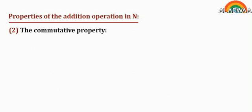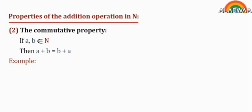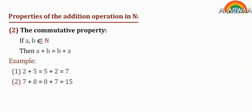Property 2: the commutative property. If a and b belong to N, then a plus b equals b plus a. For example, 2 plus 5 equals 5 plus 2 equals 7. Another example: 7 plus 8 equals 8 plus 7 equals 15.